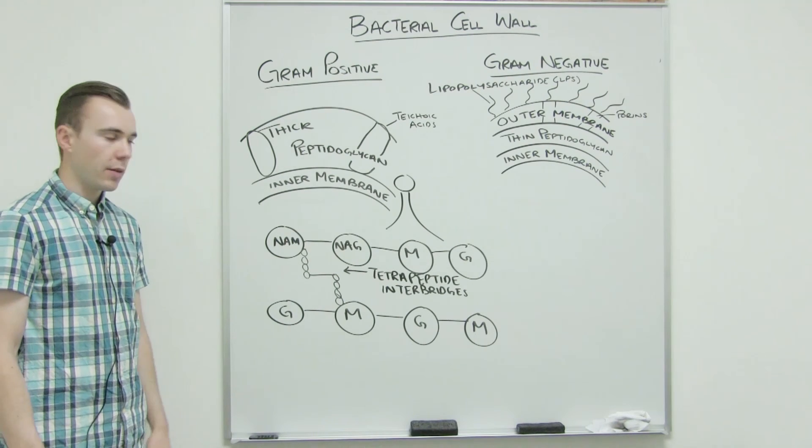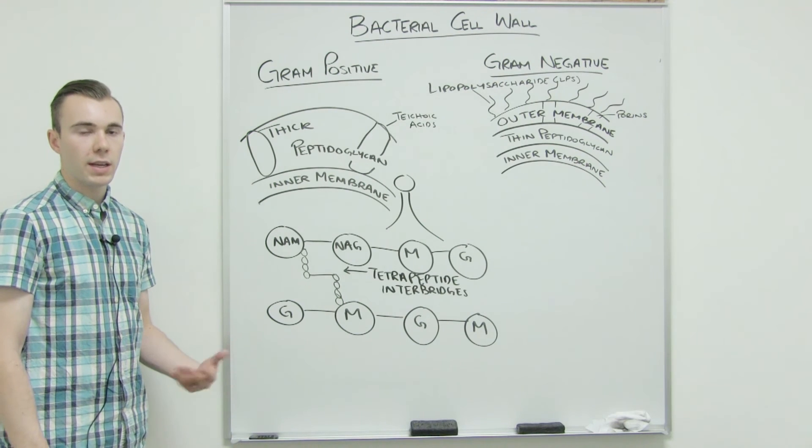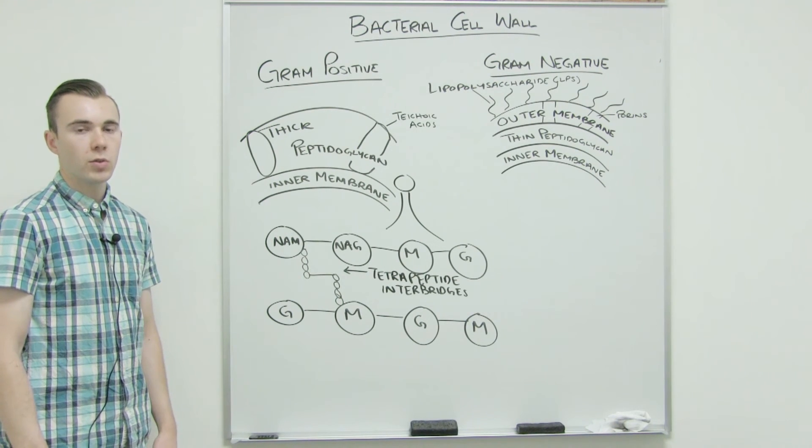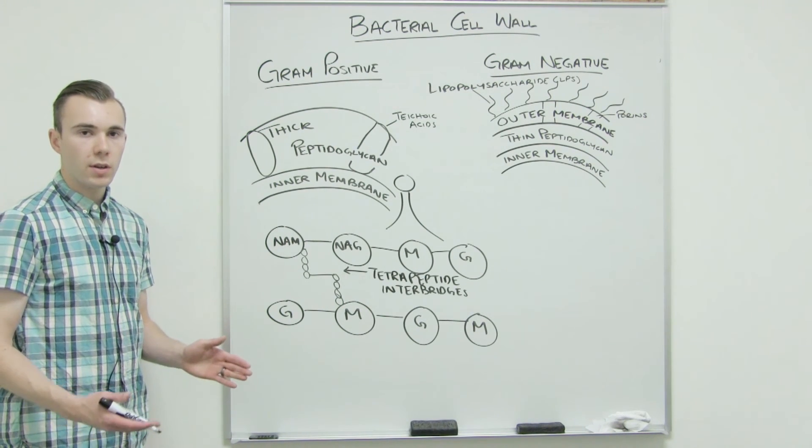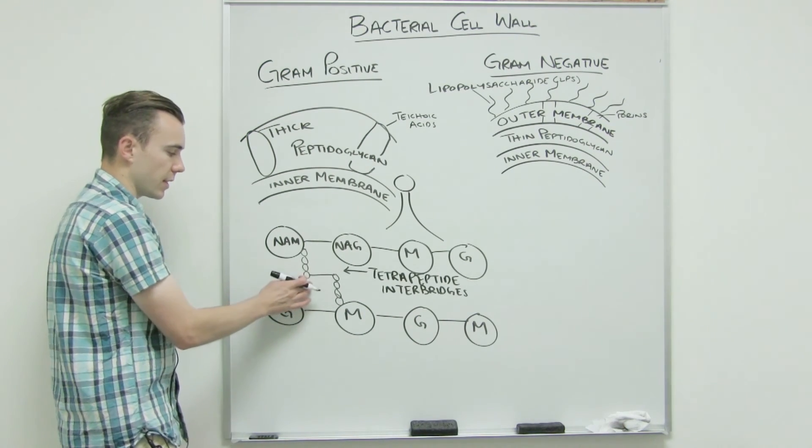So there are four amino acids coming off the M sugars. And then interbridge is something that's a bridge. So it connects things and inter means between. So it's connecting the four groups or the two groups of four peptides together. And so that's why you have this line. That's the interbridge portion.